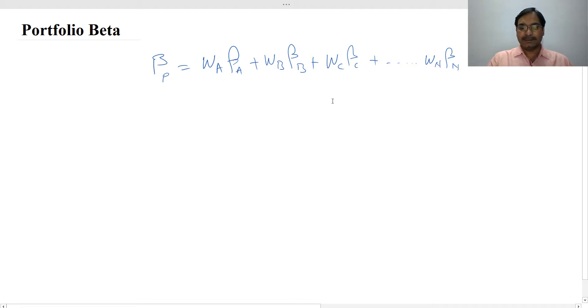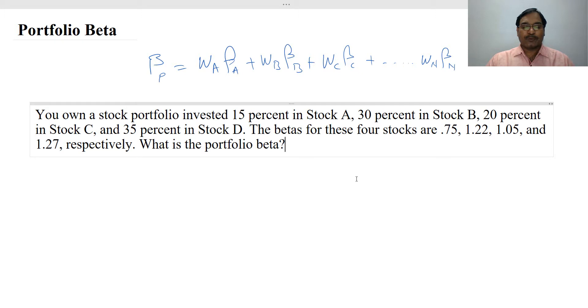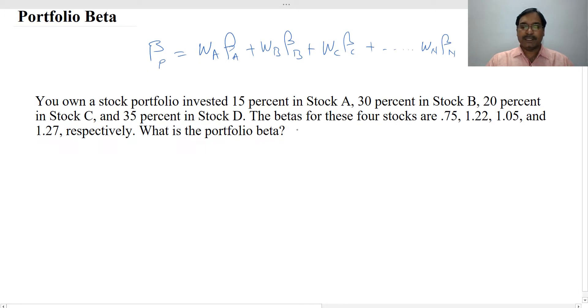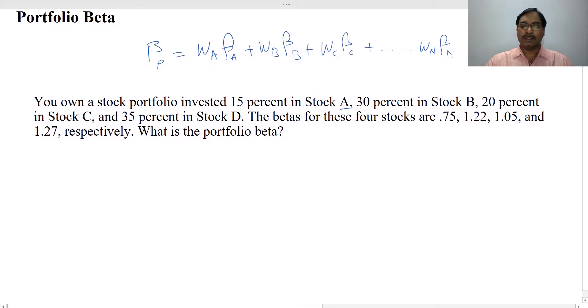Now I have an example here. You own a stock portfolio invested 15% in A. How many stocks you have? Stock A, B, C, D. Four stocks are there. So the portfolio is invested 15% in stock A.